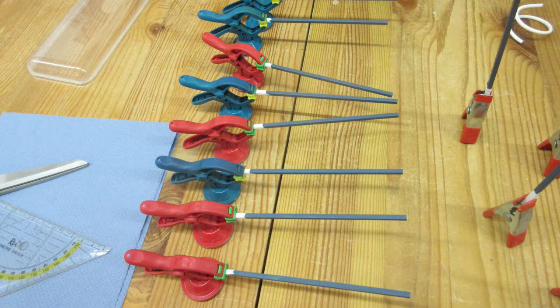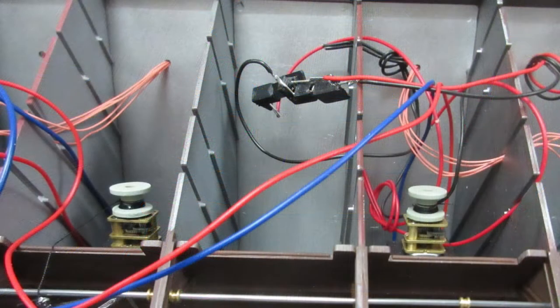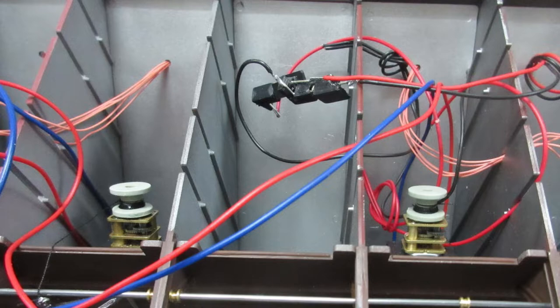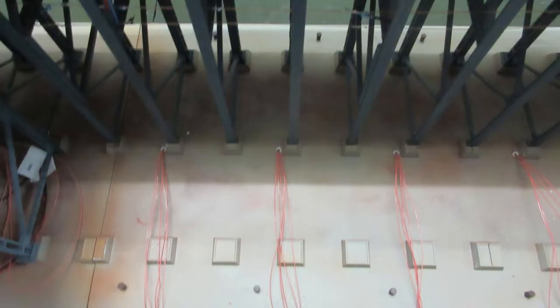To lead all cables under the module, we cut evergreen rectangle hollow profiles to the appropriate length, painted them with Tamiya XF-18 and then glued them parallel to the struts of the pocket. Cables are led through a hole in the chute and then led down through the painted hollow profile. Evergreen round hollow profiles were set into the base plate, through which the cables are then routed under the module.